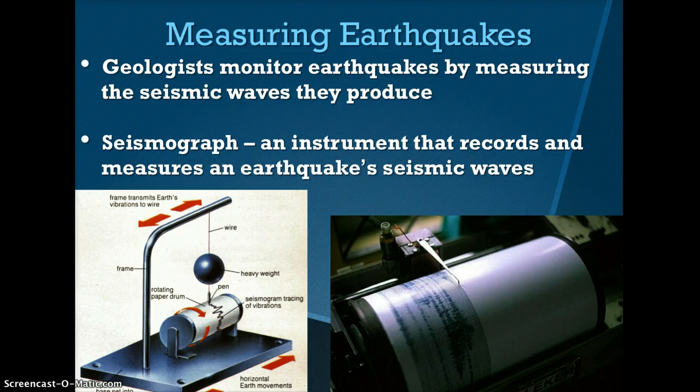A seismograph is an instrument that records and measures an earthquake's seismic waves. The vibrations caused by seismic waves cause the up and down marks on the seismograph. The P waves arrive to the seismograph first, followed by the S waves. The image on the left is a model of a seismograph, and the image on the right is a real seismograph.